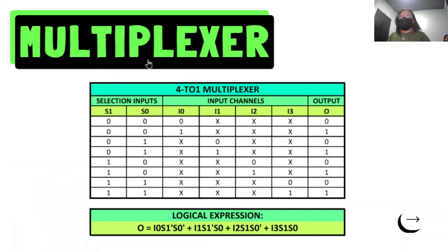So multiplexer, it is a four to one multiplexer consists of four data input lines and two select lines and a single output line. Here we can see a table, two tables where the selection inputs...